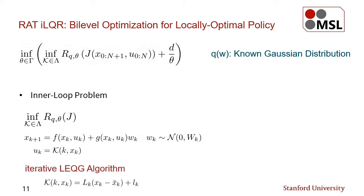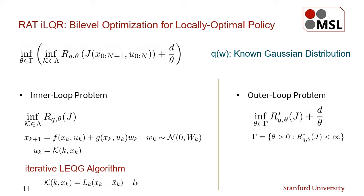To obtain a tractable solution, we leverage the iterative LEQG algorithm, a recently proposed locally optimal method that obtains an affine feedback control policy. On the other hand, the outer-loop is a one-dimensional optimization problem that is non-convex in general. This corresponds to finding the best risk-sensitivity parameter so it has the desired distribution robustness property. We locally optimize theta with a modified version of the cross-entropy method, which accounts for a feasible design space gamma that is state-dependent and initially unknown. We named the resulting algorithm RAD-ILQR.